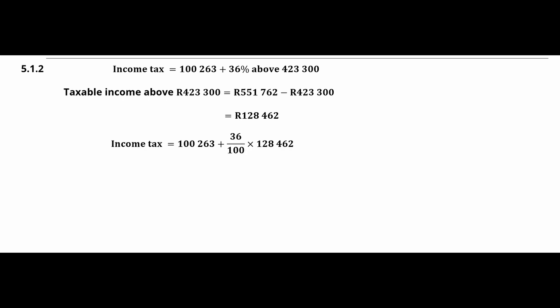Substituting this value into the tax rate equation, we get: income tax = R100,263 plus (36/100) × R128,462. This gives us an income tax of R146,509.32.